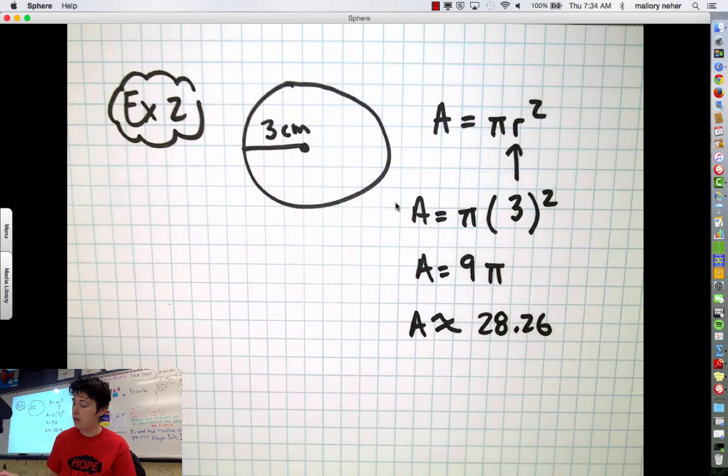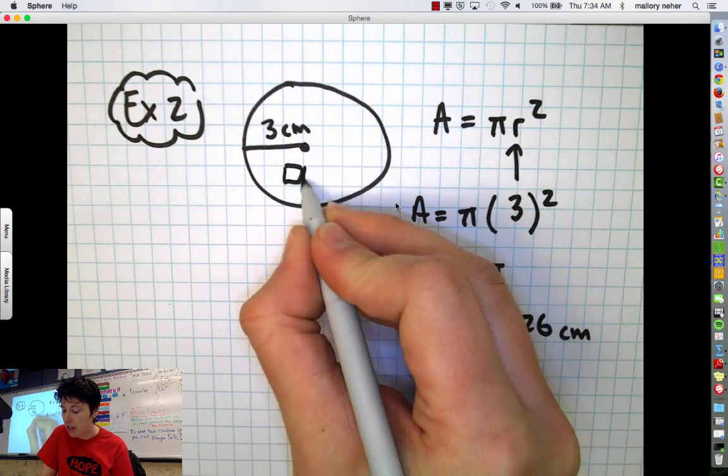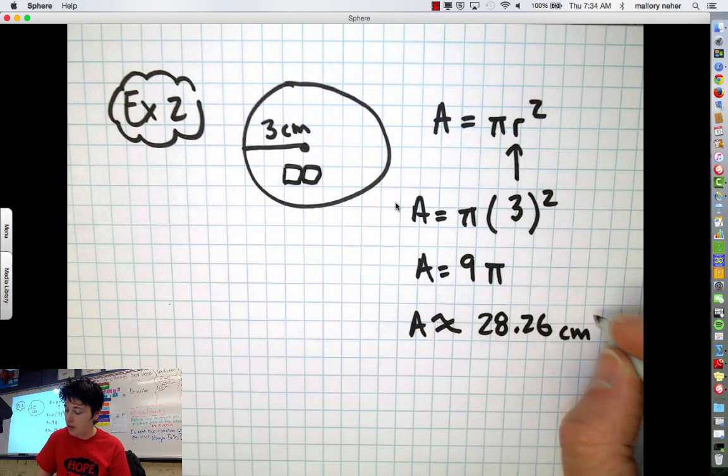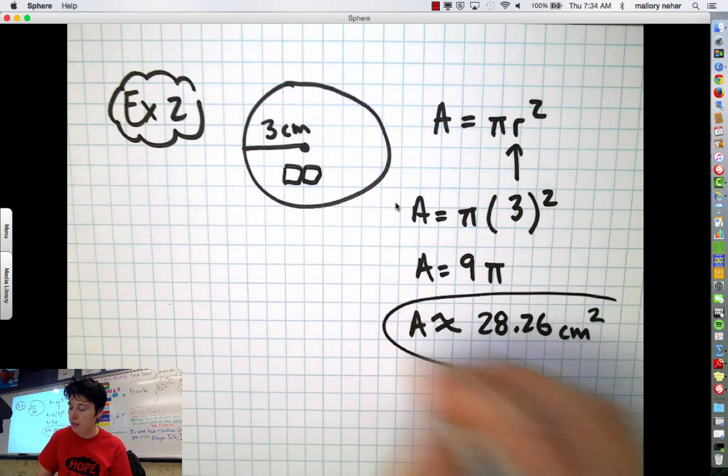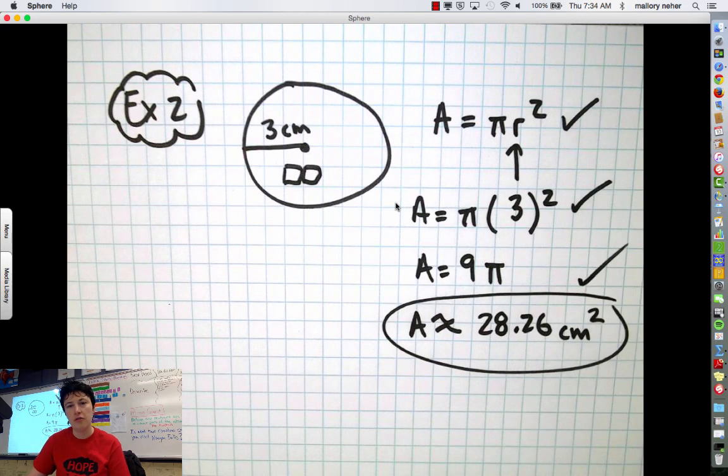And my units are in centimeters. And because these are the little tiny, tiny little square units that fit inside of here, this is centimeters squared. And that is my answer. Formula, numbers, answer. Three step process.